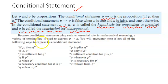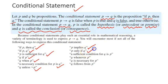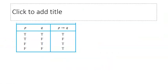And q is called the conclusion or consequence. Because conditional statements occur quite frequently in logic, there are different ways to express them. Some frequently used ways: 'if p then q,' 'if p, q,' 'p is sufficient for q,' 'q if p,' 'q when p,' 'a necessary condition for p is q,' 'q unless not p,' 'p implies q,' 'p only if q,' 'a sufficient condition for q is p,' 'q whenever p,' 'q is necessary for p,' and 'q follows from p.'